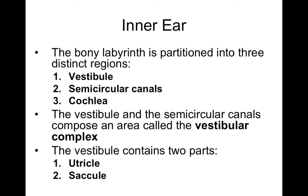Zooming in on the utricle and saccule, within that we have the macula. Looking at an individual macula, we have hair cells with stereocilia and kinocilium that project up into the otolithic membrane. The otolithic membrane is attached to the macula and has weight to it because it contains otoliths — calcium carbonate crystals embedded in a gelatinous structure. When you tilt your head, it causes the otolithic membrane to also tilt, which causes the stereocilia to bend.